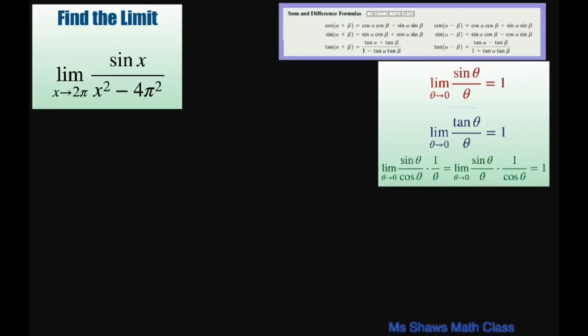Basically, what we're going to do is notice that if we substitute in x, so if x equals 2π and we substitute this in, we're going to get 0 in the denominator and also in the numerator.